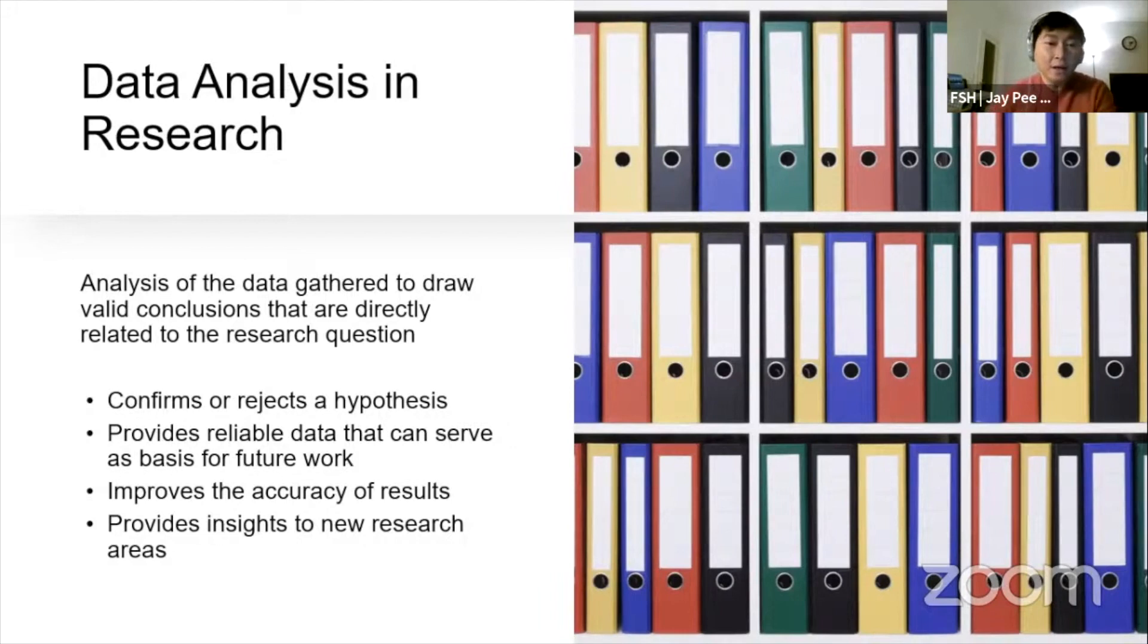Also, it improves the accuracy of results. When we analyze the data, most often we encounter unexpected results or unexpected trends. So we need to look into those spurious or probably remarkable outcomes or data points to judge if those are just errors in measurement or if it presents some anomalies in the experiment. So we go back to the experimental design to investigate if there are questionable results. And in turn, it will improve the accuracy of our final results.